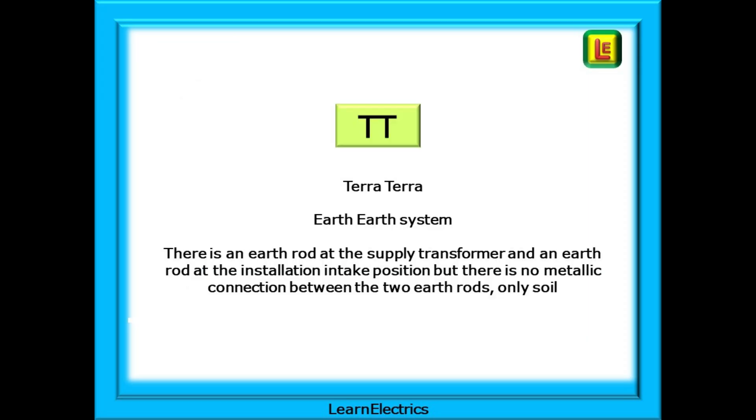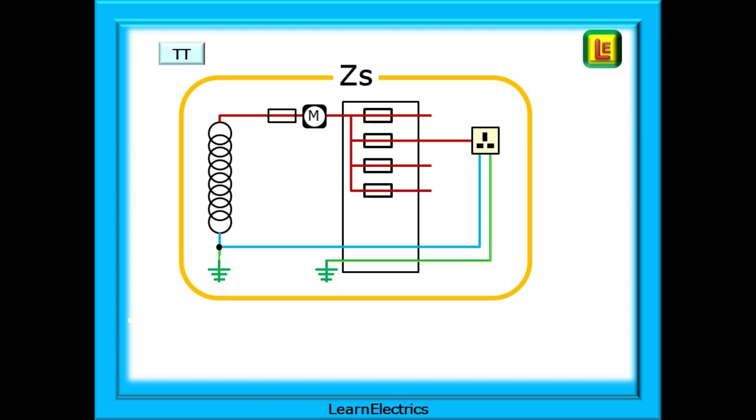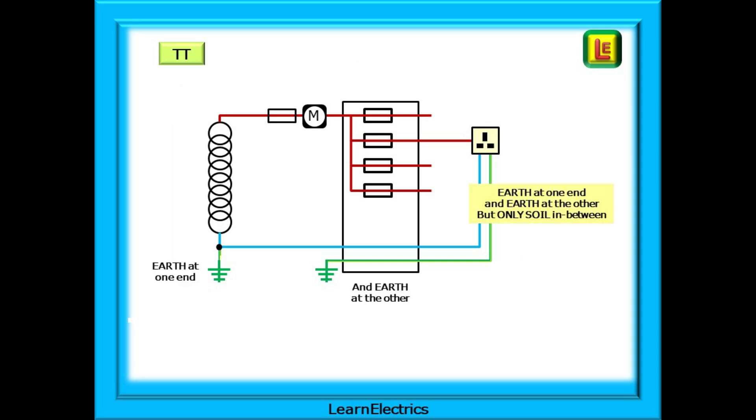The third type of system that we should look at is the TT system. Terra-Terra, or Earth-Earth system. There is an Earth Rod at the supply transformer, and an Earth Rod at the installation intake position, but there is no metallic connection between the two Earth Rods. Only soil. And these Earth Rods can sometimes be hundreds of metres apart. TT is a very much older earthing system, but there are still plenty of them all around the country, and indeed, TT systems are still installed in some locations. Don't think that TT systems are just used in the countryside. Where I used to live, hundreds, possibly thousands of houses in the town centre are on a TT system. That's what was installed many, many years ago. The system still works. Why change it?